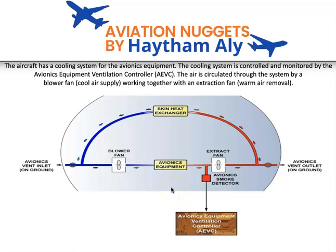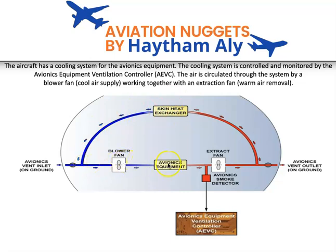If there is a very cold condition on the ground or the aircraft is in flight, the closed configuration is used. The skin air inlet valve and the skin air outlet valve are both closed. The blower and extract fans operate to blow air into the avionics equipment and take warm air out, and the air is circulated in the avionics compartment. Thanks to the skin heat exchanger, the warm air is cooled down again and the blower fan pushes it back onto the avionics equipment.